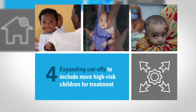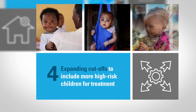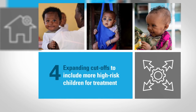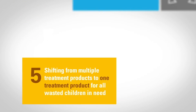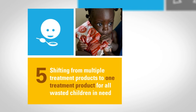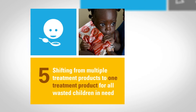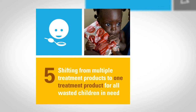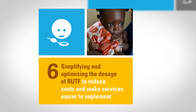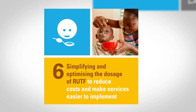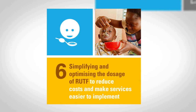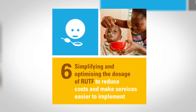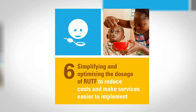Expanding cut-offs to include more high-risk children for treatment. Shifting from multiple treatment products to one treatment product for all wasted children in need. Simplifying and optimizing the dosage of RUTF to reduce costs and make services easier to implement.